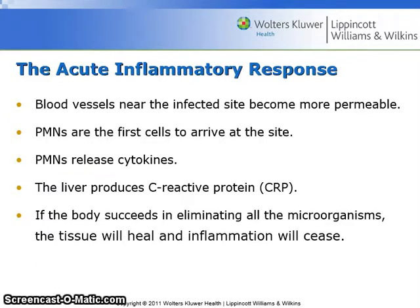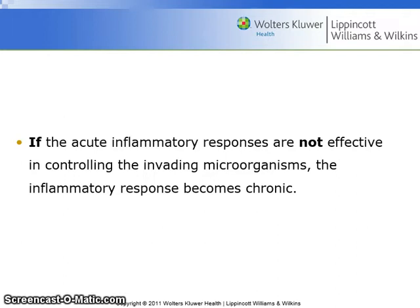The acute inflammatory response: blood vessels near the infected site become more permeable. PMNs are the first cells to arrive at the site; PMNs release cytokines. The liver produces C-reactive protein. If the body succeeds in eliminating all the microorganisms, the tissue will heal and inflammation will cease. If the acute inflammatory responses are not effective in controlling the invading microorganisms, the inflammatory response becomes chronic.